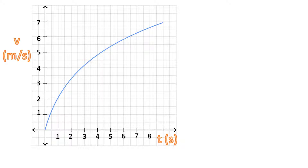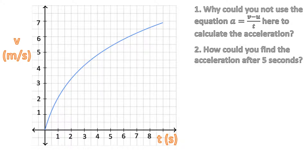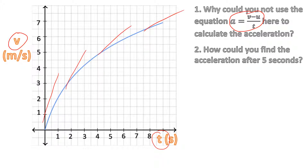The last example is a non-linear graph — it does not follow y equals mx plus c; it is not a straight line. Why could you not use that equation to calculate the acceleration? Because the rate of acceleration keeps changing. We have a velocity-time graph where the gradient keeps changing — it goes from very positive to slightly less positive, trending towards zero. So the rate of acceleration is decreasing, and we can't use that formula because there's no constant change in the rate of velocity.